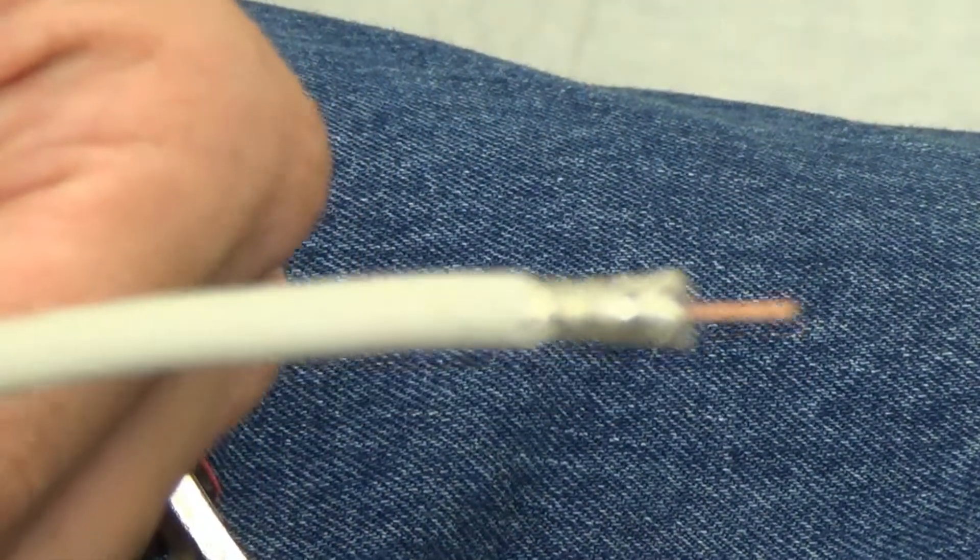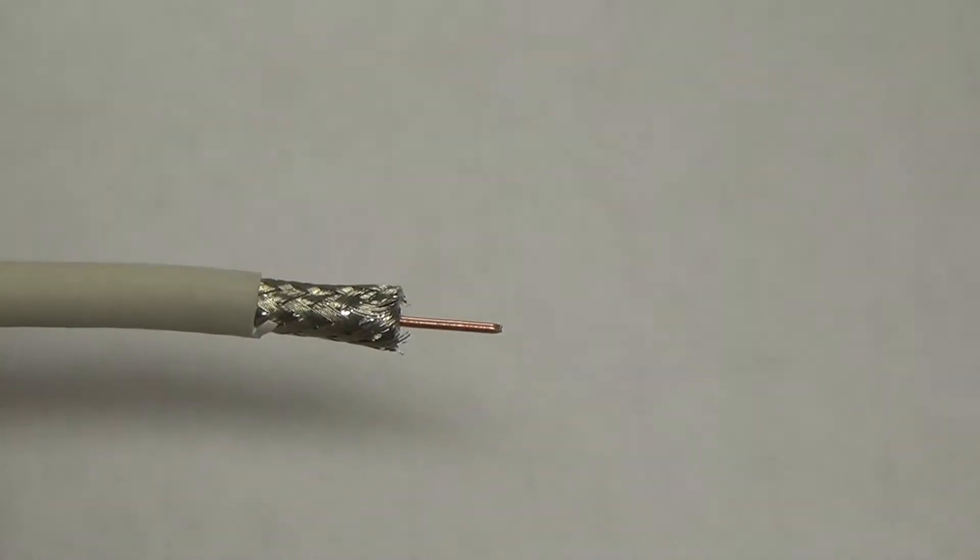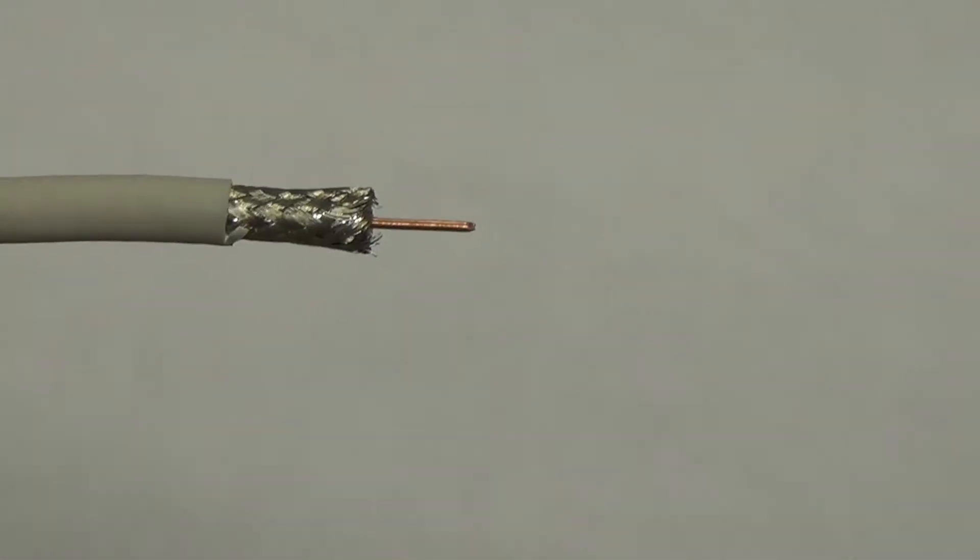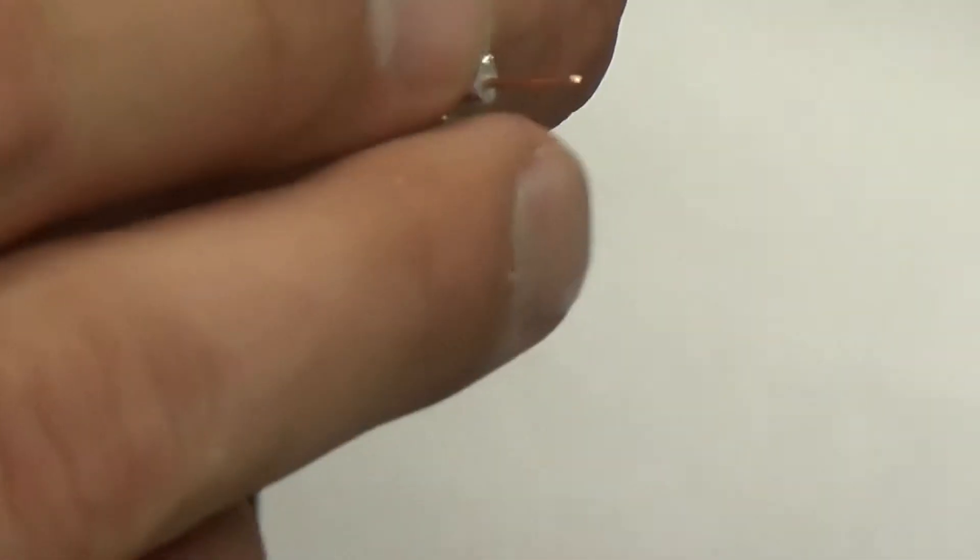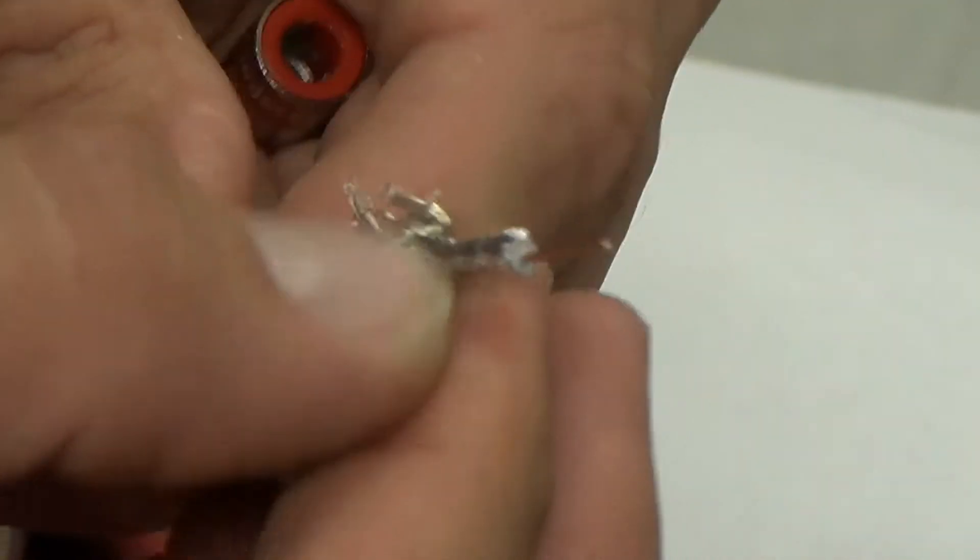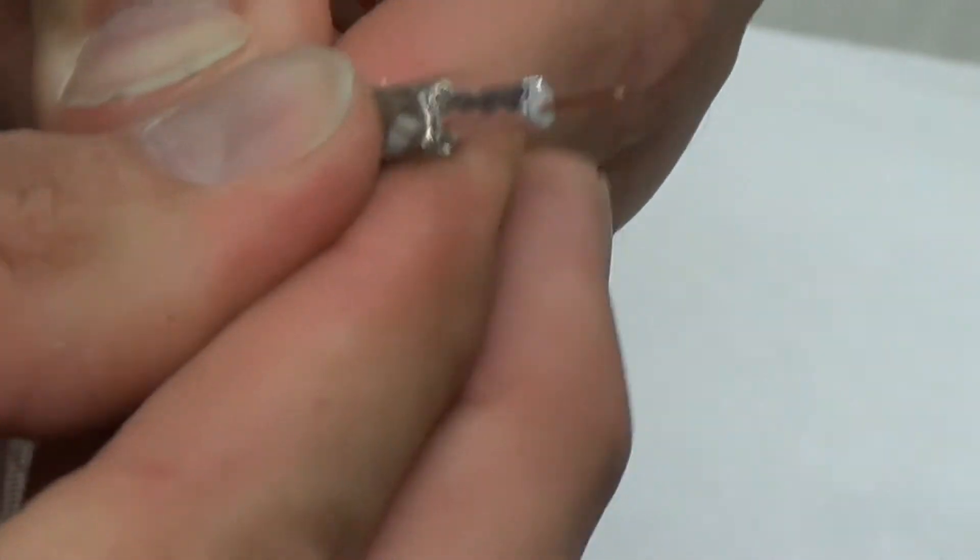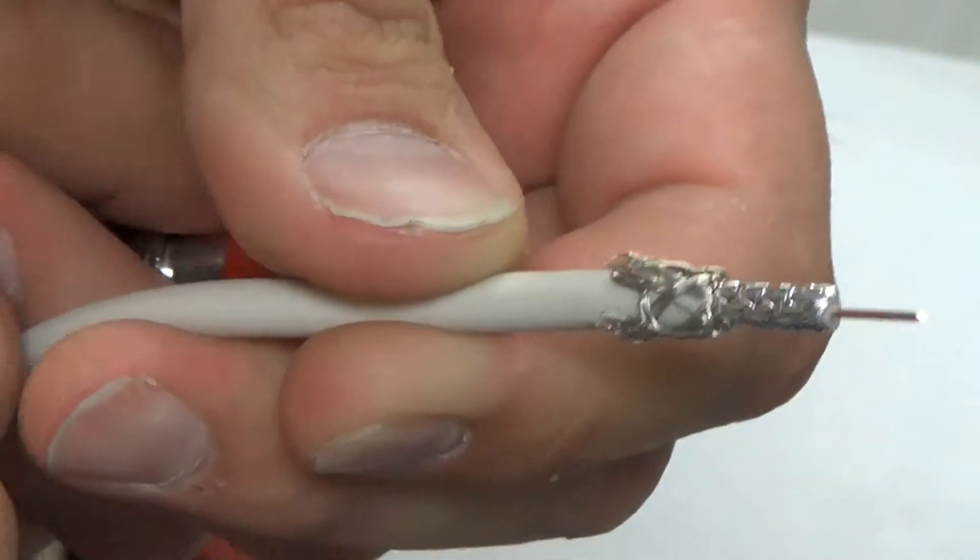Let's grab that ruler right there. So three-eighths of an inch is what we're looking at, and then we fold our foil back, our braid back. That's once again, that's a typical practice of making a connector - always fold back your braid on almost every single connector you ever make. Now there's different times on certain connectors you'd fold back, but on this one, it's this time.